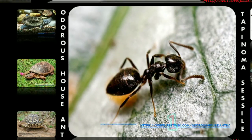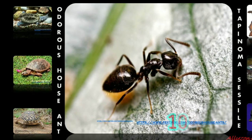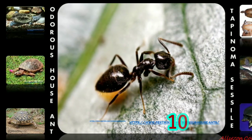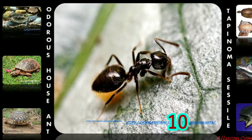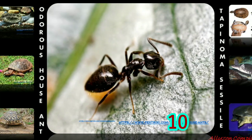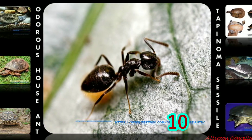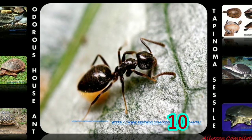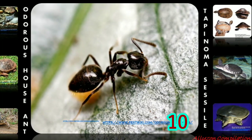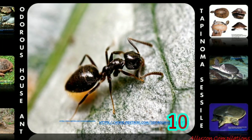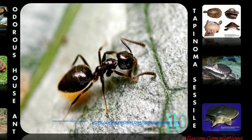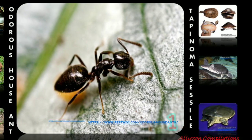Odorous house ant. Tapinoma sessile is one of the most widespread North American ant species. It is abundant in a wide range of habitats. It nests in the ground, under and within objects, in downed wood, and will in some cases move into human structures. The odorous house ant is considered a pest when it enters structures searching for food, water, or nest sites. It cannot sting and may only bite if you stick a hand into its nest and vigorously disturb the colony.